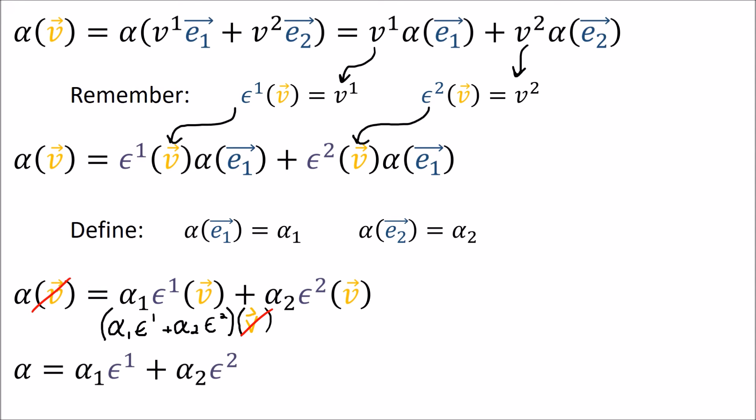Finally we get this: alpha equals α₁ epsilon 1 plus α₂ epsilon 2. What we've done is written a general covector alpha, which could be any covector of our choice, as a linear combination of the epsilon covectors. This means that the epsilon covectors form a basis for the set of all covectors. For that reason we call these epsilons the dual basis, because they're a basis for the dual space v star. We've written this out algebraically, but let's try to think of this visually so we have a better idea of what's going on.